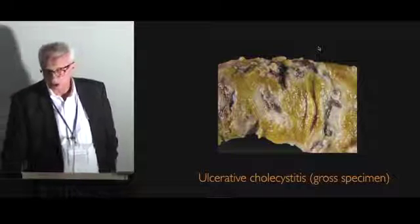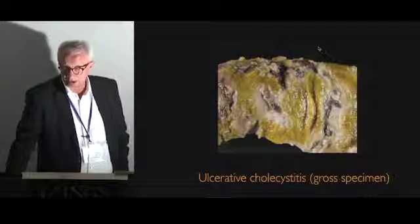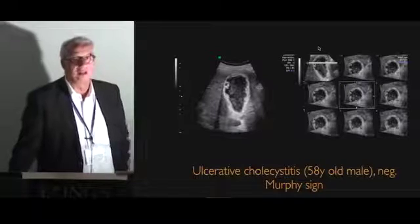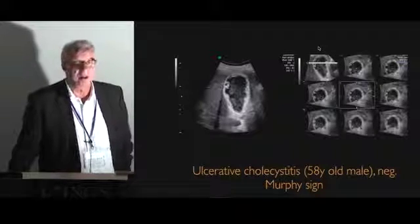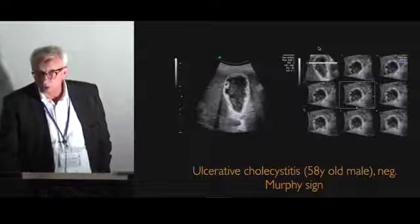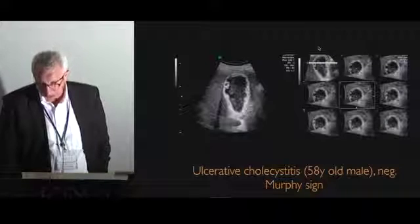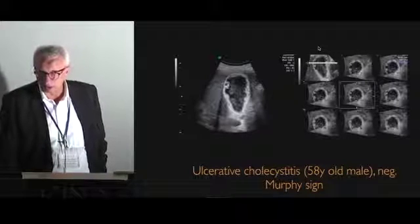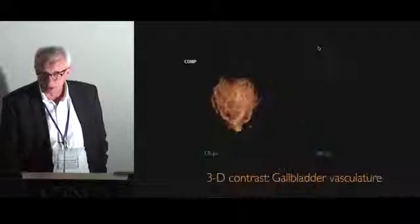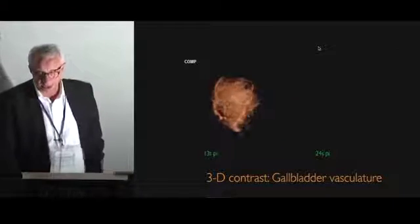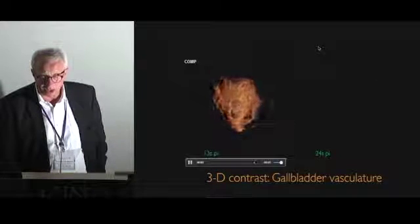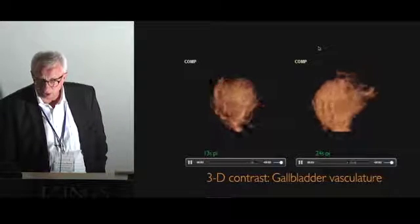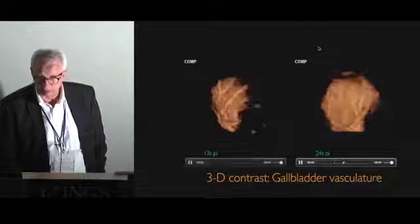This is the gross specimen after cholecystectomy. Another patient came in and had no complaints. The referring doctor was quite surprised at what he saw when he looked at the gallbladder and said there's something wrong — please see a specialist. This is what we saw: ulcerations of the gallbladder wall. The patient also had a gallbladder stone. In a 3D technique, 30 seconds after injection of contrast agent, you can see the vessels of the wall and then the ulcerations clearly.